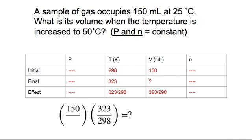So when I go to find out what is my new volume, I'm just taking my 150 milliliters and I'm multiplying by this effect of 323 divided by 298. So let's do the calculation.